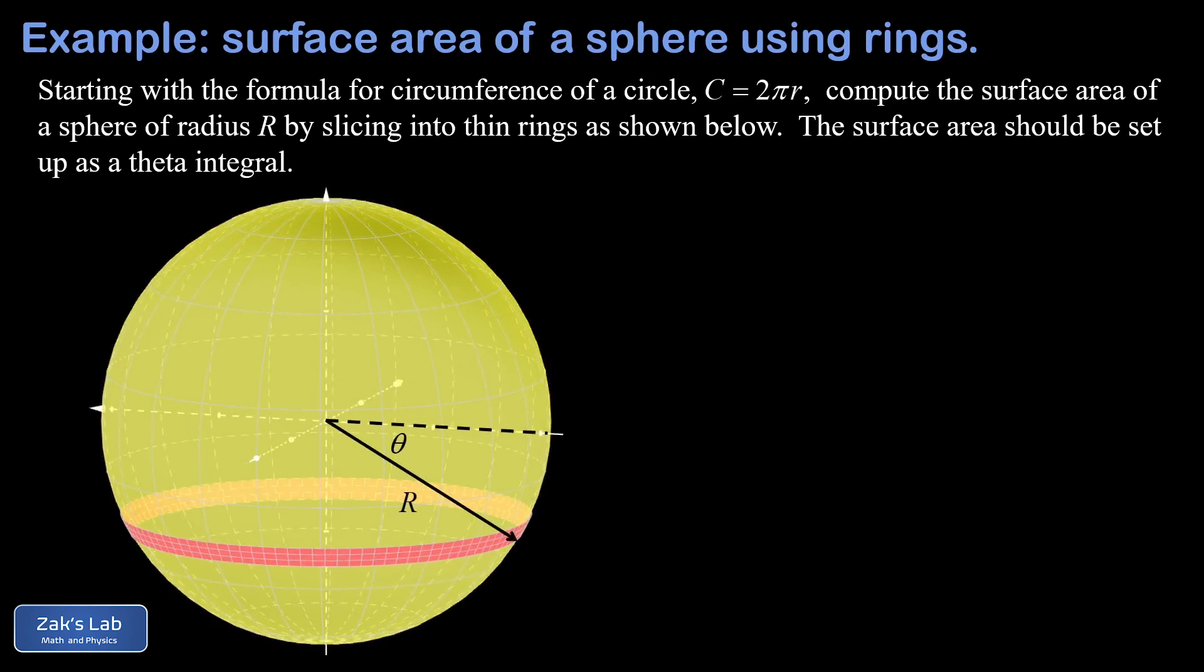The main strategy for this integration problem is that we need to get the dimensions of the ring labeled, then we're going to cut and unroll it and express its area as a differential quantity, and then use an integral to add up all the rings.